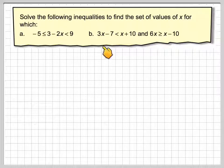And we want to find the values in common where 3x minus 7 is less than x plus 10 and 6x is greater than or equal to x minus 10.